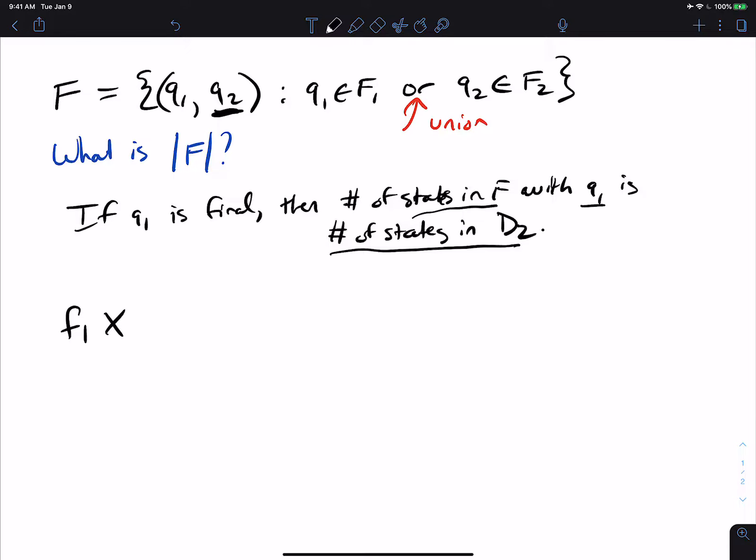times the number of states in the second one, which is N2. So this right here is the number of states in F with some final state from the first DFA D1.